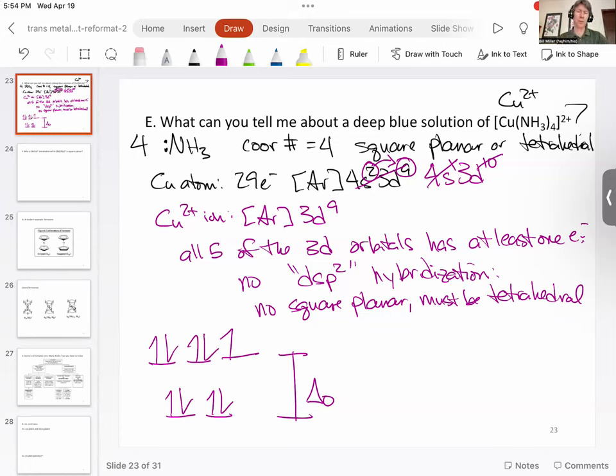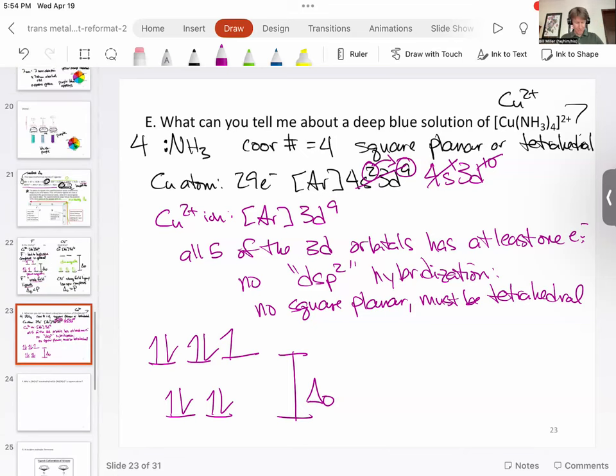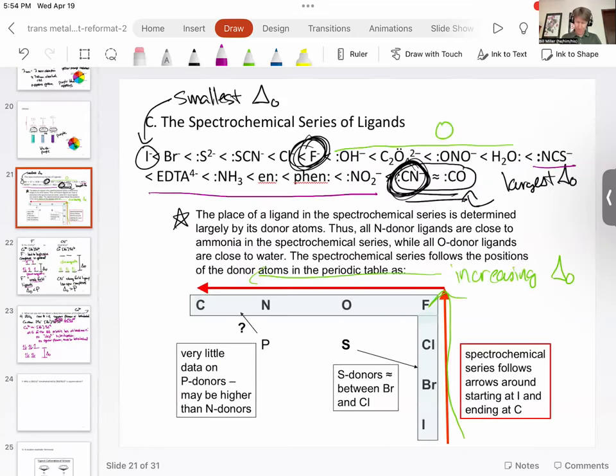Turns out it doesn't matter how you do them, if you try and do them low spin or high spin. We can see that ammonia is closer to being high spin, but luckily we don't have to worry about this.